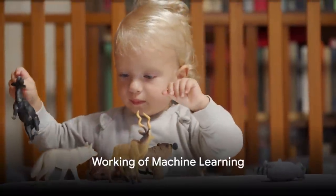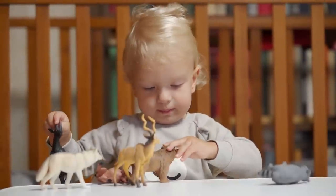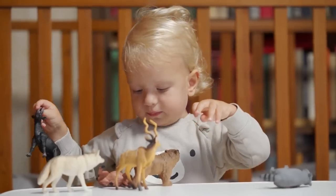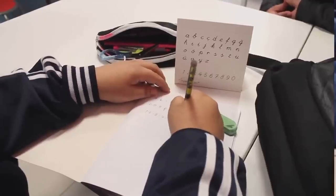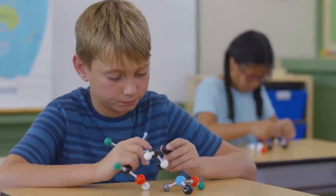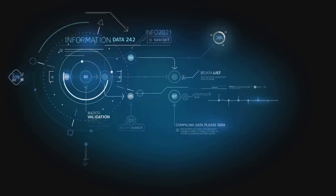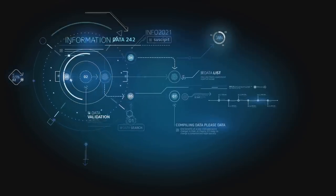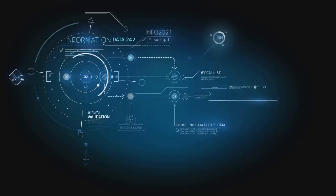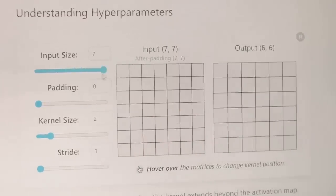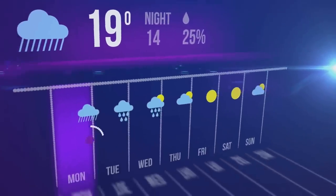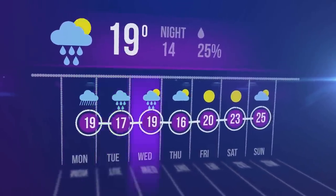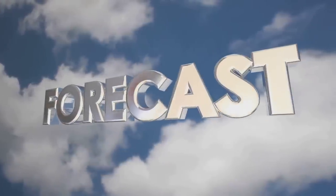At its core, ML involves feeding data into algorithms to train models. Imagine you're teaching a child to identify animals — you show pictures of different animals and name them, and the child over time begins to associate images with names. That's pretty much how machine learning works. Instead of children, we have models; instead of animal pictures, we have data points. A model is a mathematical representation of a real-world process. For instance, a weather prediction model might include factors like temperature, humidity, and wind speed. The more accurate our model, the better it can predict future weather patterns.